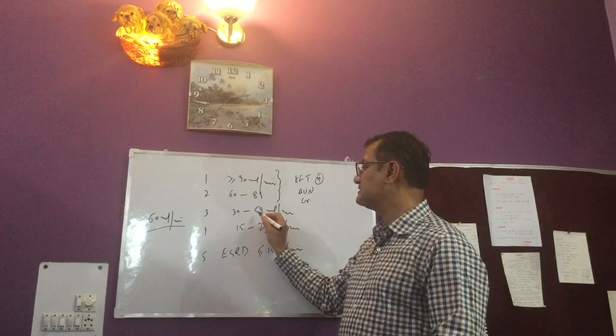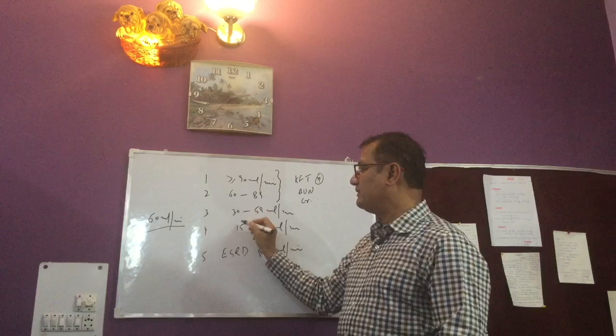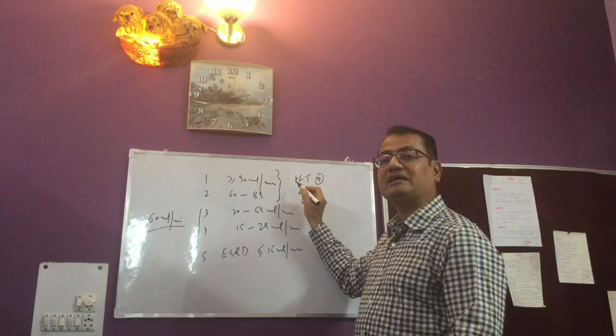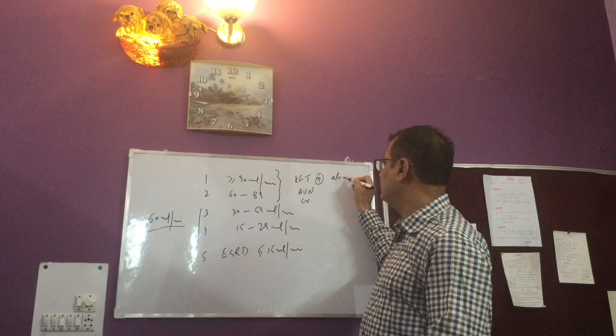So till the time the GFR is 60 ml, there is no issue. So once the GFR starts going below 60 ml, that is stage 3 onwards, we are going to find the disturbance in the kidney function test.